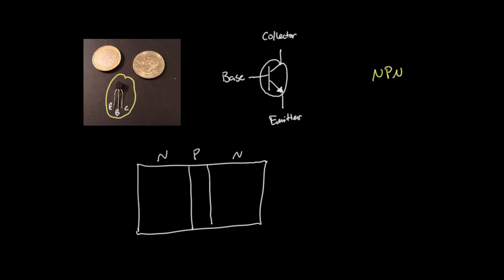What a transistor does is act as a current-controlled switch. If we establish a small current from the base to the emitter, the transistor will switch on and allow a very large current to flow from the collector to the emitter. Sometimes you can also use this as an amplifier, because a small current is amplified into a large current flow.